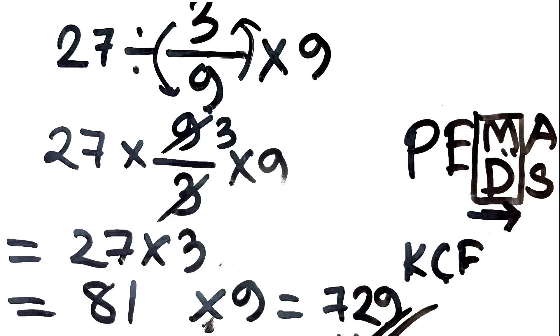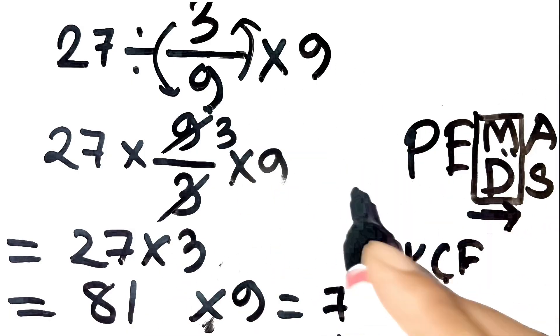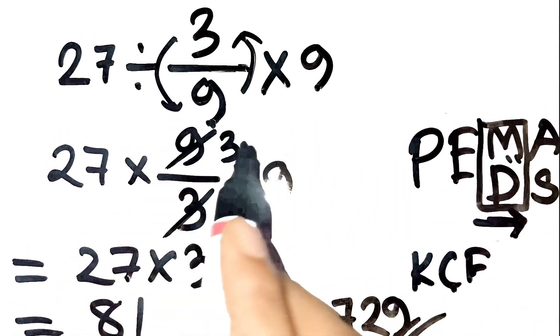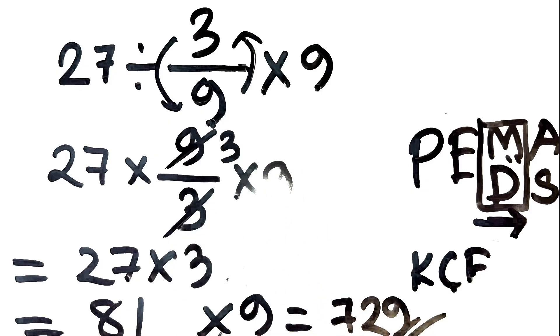Yep, 729. Way bigger than what most people get if they just try to cancel numbers too quickly. If you don't believe it, try it on your calculator, okay? And if you still have doubts, please write it down in the comments. Thanks for watching.